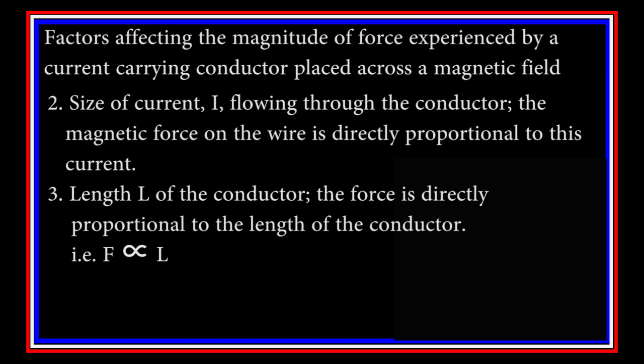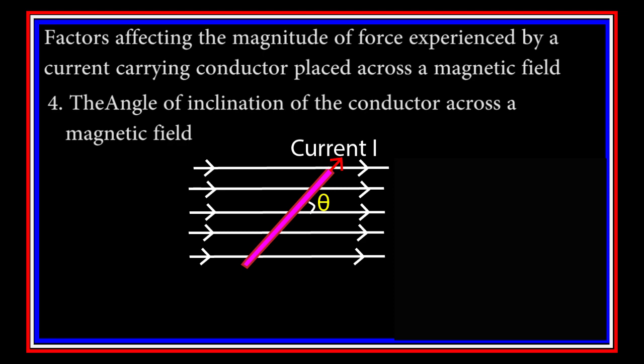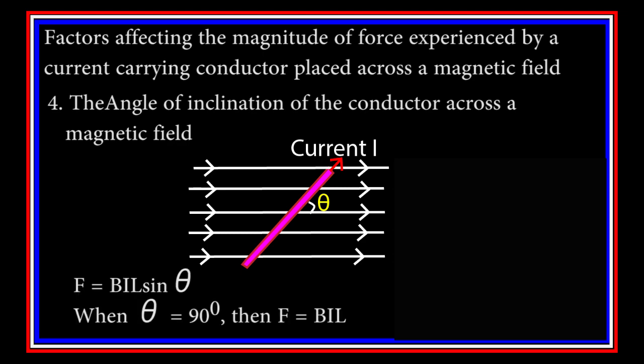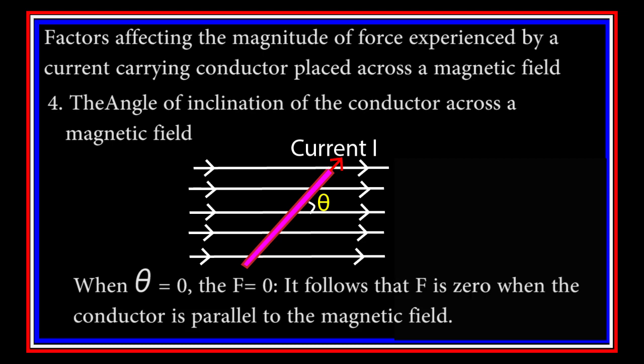Three: the length of the conductor — the force is directly proportional to the length of the conductor. Four: the angle of inclination of the conductor across the magnetic field. If the angle of inclination of the conductor across the magnetic field is theta, then the force F is equal to BIL sin theta. When theta is 90 degrees, the force is BIL. When theta is 0 degrees, the force is 0. It follows that the force F is 0 when the conductor is parallel to the magnetic field.